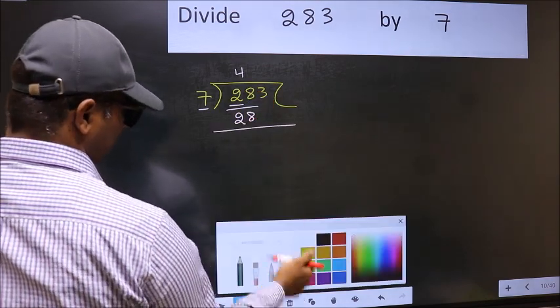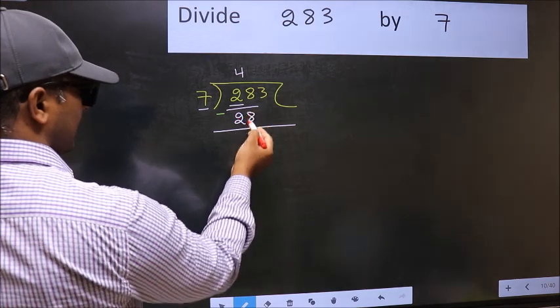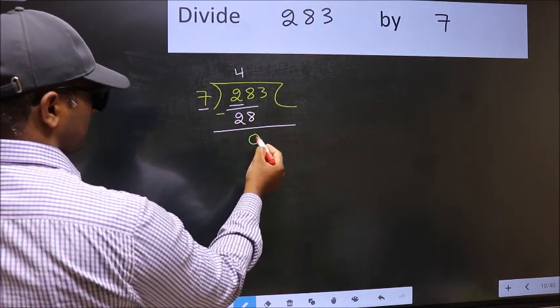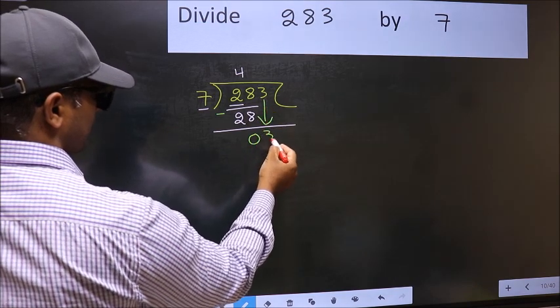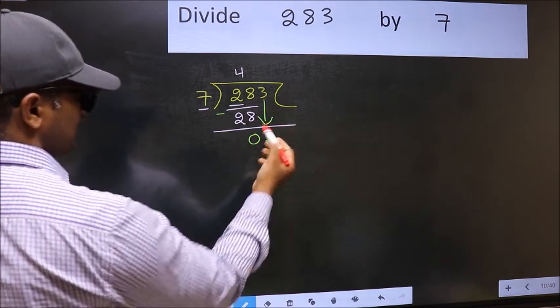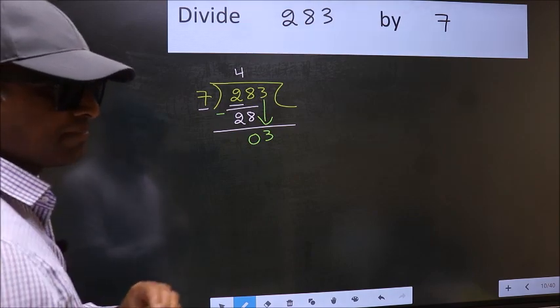Now you should subtract. 28 minus 28 is 0. After this, bring down the beside number. So, 3 down. After this step, the mistake happens.